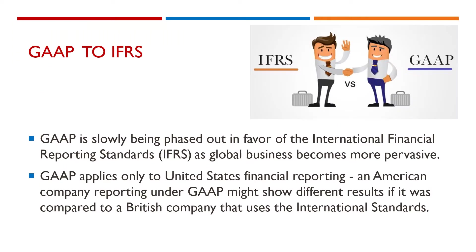GAAP is slowly being phased out in favor of the International Financial Reporting Standards, the IFRS, as global business becomes more pervasive. GAAP applies only to United States financial reporting, and an American company reporting under GAAP might show different results if it was compared to a British company that uses the international standards.